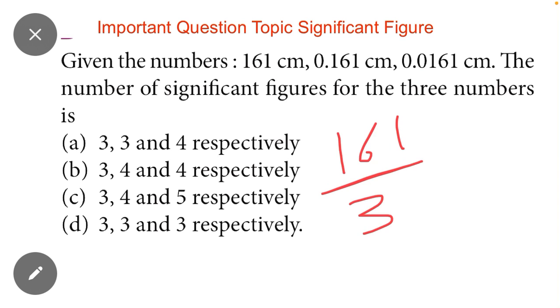Similarly, we check next: 0.161. All the digits after the decimal point are significant figures. It means there are three significant figures present in this number.